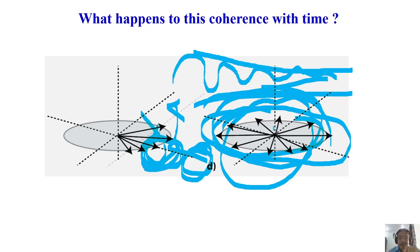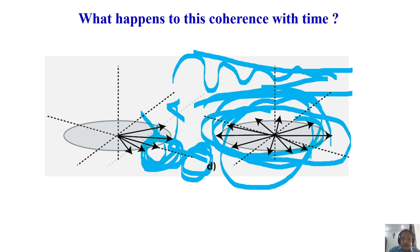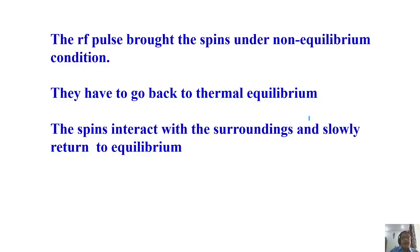This T2 relaxation, where the spins relax in the XY plane and complete decoherence occurs, is also called transverse relaxation time, or in other words, spin-spin relaxation time. The spins undergo decoherence because they are interacting with the surroundings, and as a consequence they lose phase coherence. The time required for this interaction and for complete loss of coherence is T2, which is of the order of milliseconds to seconds.